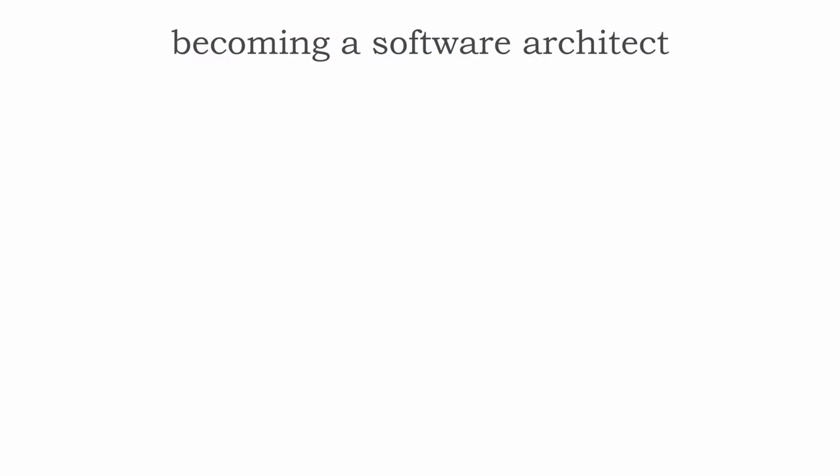In this lesson I'm going to introduce the roadmap and talk about the first piece. The first step in becoming a software architect is to make sure you're prepared, and that's what we're going to dive into in this lesson. I also want to show you the entire roadmap. After looking at being prepared, we develop a personal roadmap and radar, which gives us direction for making decisions about different projects, what to work on, and maybe even different jobs.